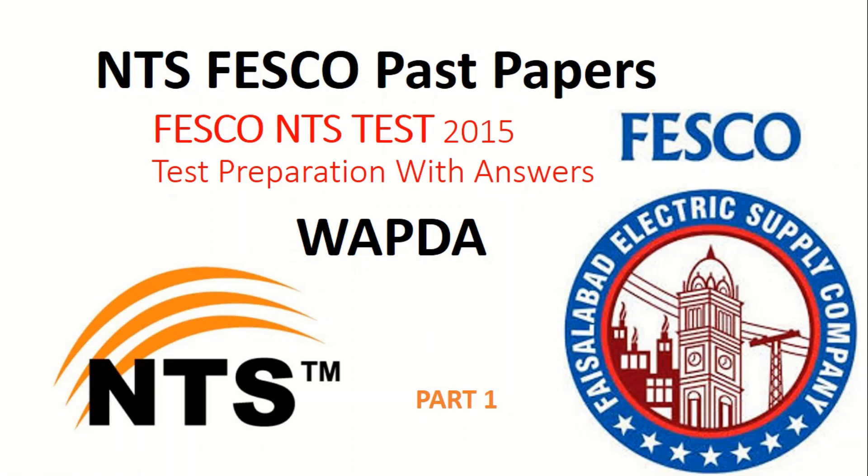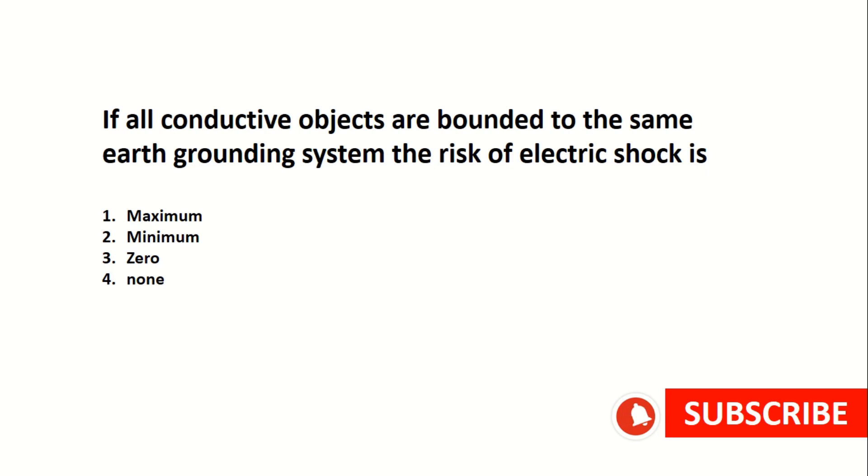Bismillah al-Rahman al-Rahim. Assalamualaikum friends, today I will discuss ETEA past paper answers with you. So let's start. If all conductive objects are bounded to the same earth grounding system, the risk of electric shock is minimum.